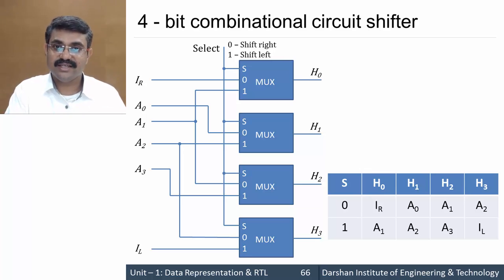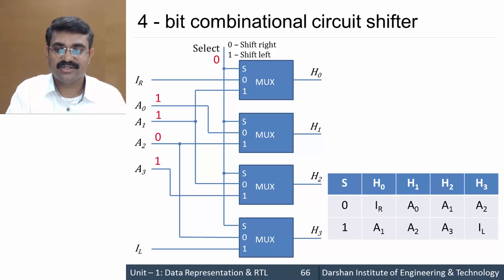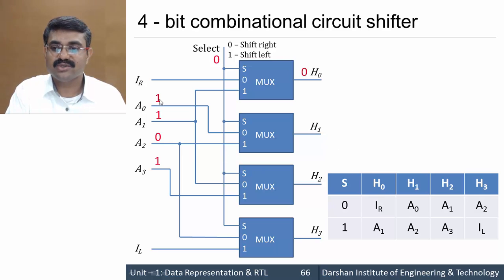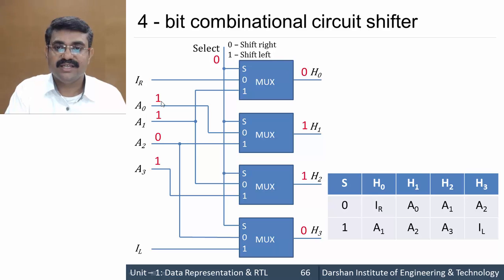As an example, performing logical shift right on 1101: set select = 0 for shift right and IR = 0 for logical shift. From the function table, h0 = 0 (from IR), h1 = a0 = 1, h2 = a1 = 1, h3 = a2 = 0, and a3 = 1 is discarded. The result is 0110. This demonstrates how the circuit performs logical shift right.